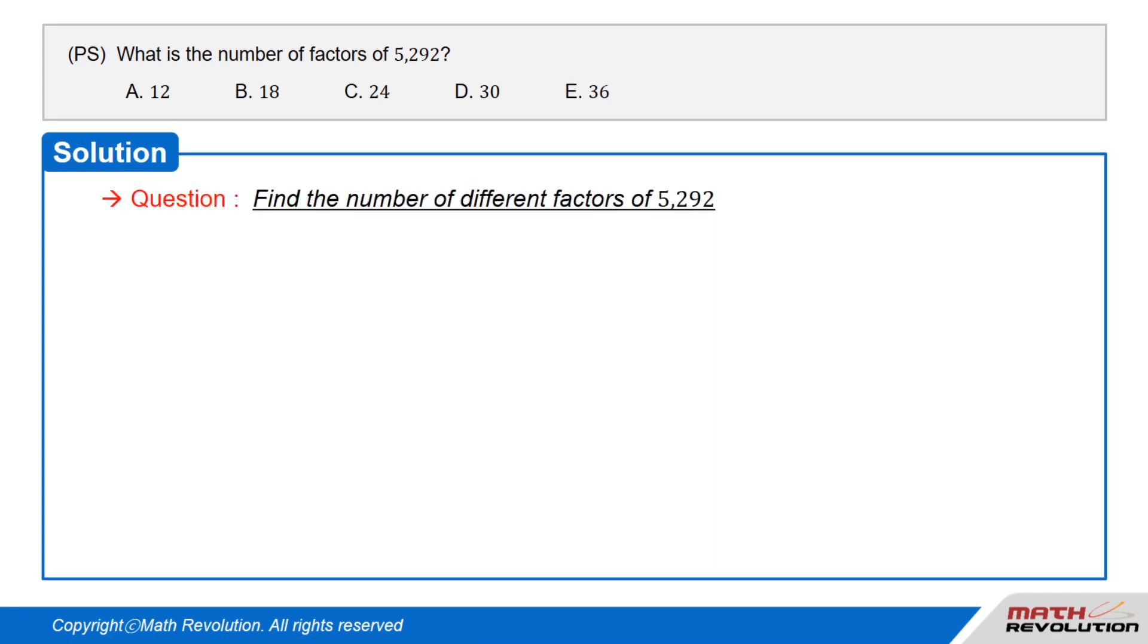We are required to find the number of different factors of 5,292. After factorization, you can add 1 to each exponent and then multiply them.